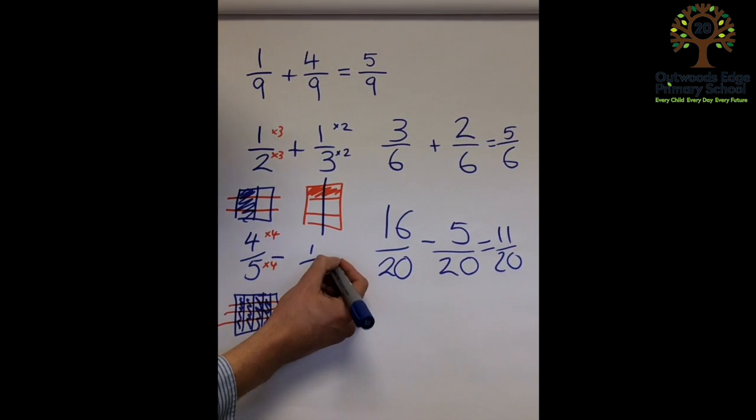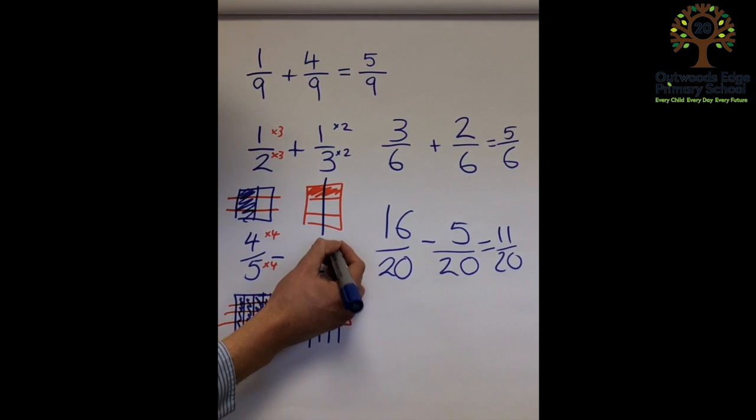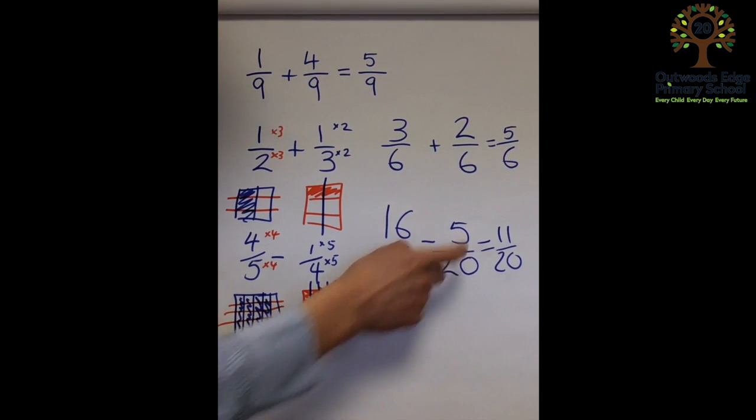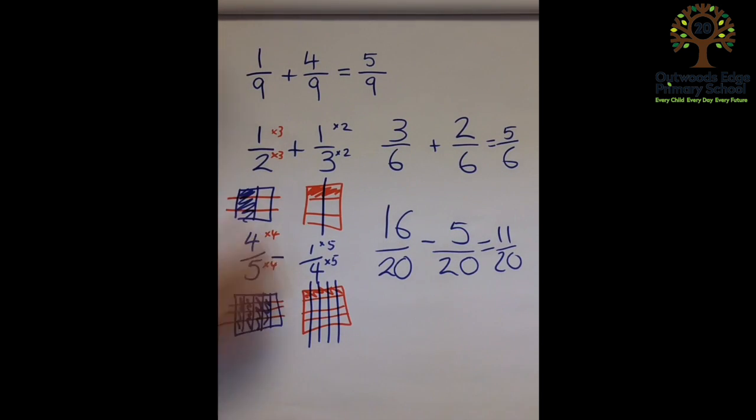On this side, I've timesed the fraction by five. Four fives are twenty, one times five is five. Okay, and as I said to you, that is a problem that children can solve in less than a minute, no problem.